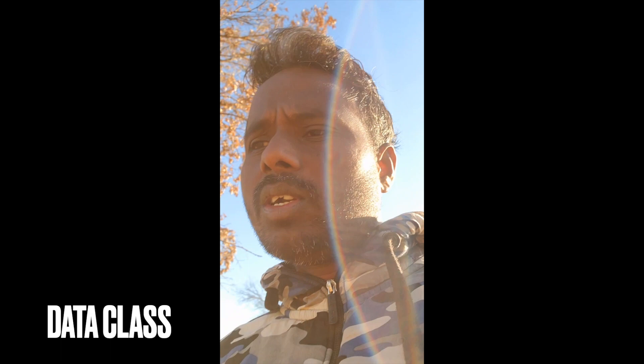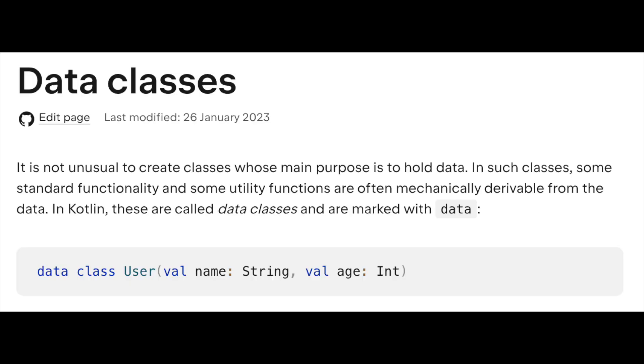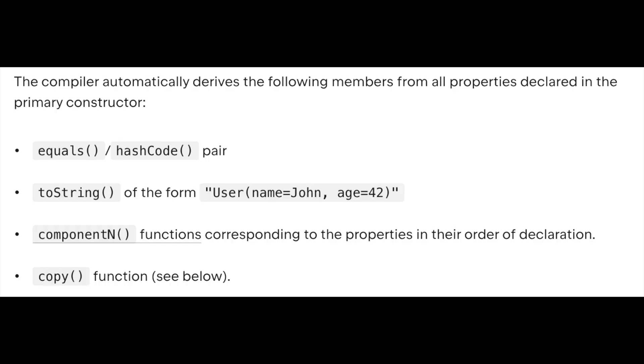Next is the data class. An abstract class is not a data class. In the data class, we handle a set of data. There are properties and functions, but in the data class we mostly use properties. For example, in server responses, we use data classes. The functions are already implemented in the data class.